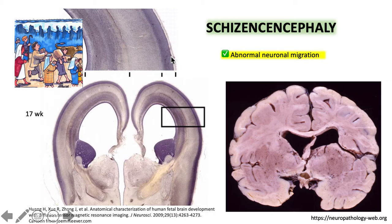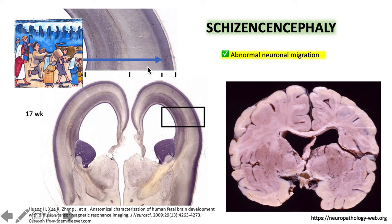If there is no migration of the neurons to the cortex, there will be no axons to be formed here and there will be no axons to myelinate later. This explains why, if the neurons fail to migrate from the subventricular zone to the cortex, the resultant cleft to be formed will be lined by dysplastic gray matter.